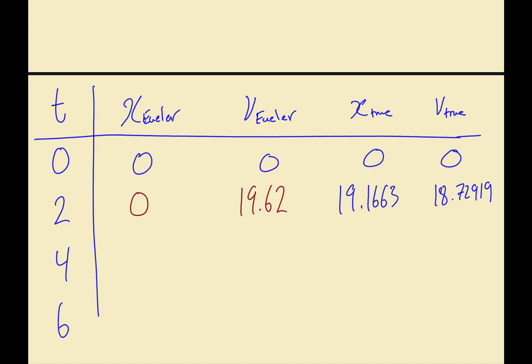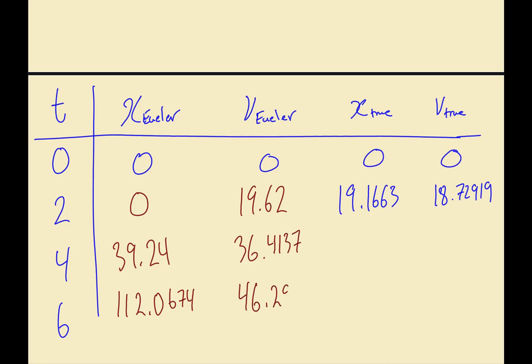The velocity got close but displacement was pretty far off. Again, because we're using Euler's method it's not the most accurate, but it's sufficient. If you reduce the step size h you can get more accurate values. At t = 4: x_Euler = 39.24, v_Euler = 36.4137. At t = 6 the Euler displacement result is 112.something.